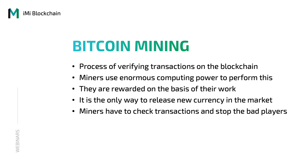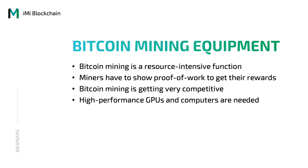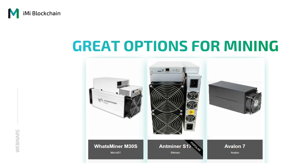Miners have to check the transactions and stop bad players and hackers. As Bitcoin mining is a resource-intensive function, it is imperative that you have the right set of equipment. Miners have to show proof of work to get their rewards. Bitcoin mining is also very competitive, which is why miners cannot compromise when it comes to their equipment. High performance GPUs and computers are needed for mining; otherwise, you might get slowed down by performance. The Whatsminer M30S, Antminer S17, or Avalon 7 are great options to meet the purpose.